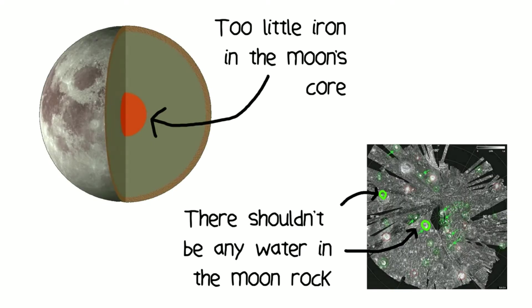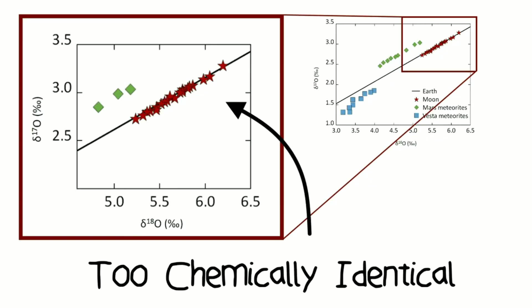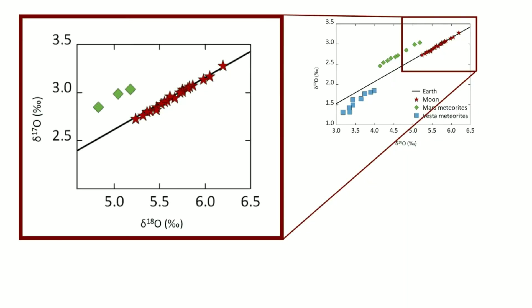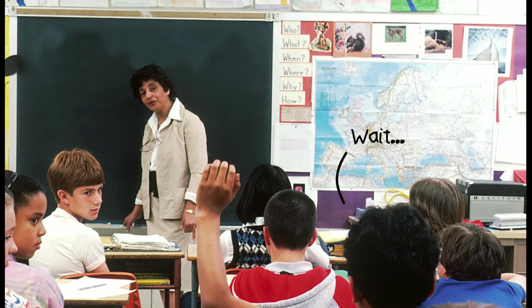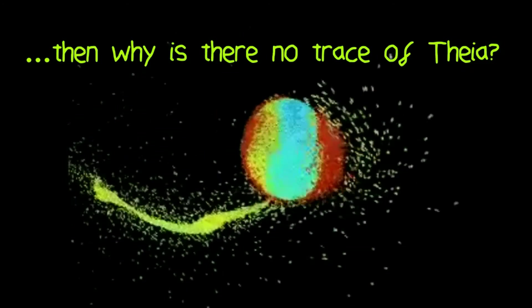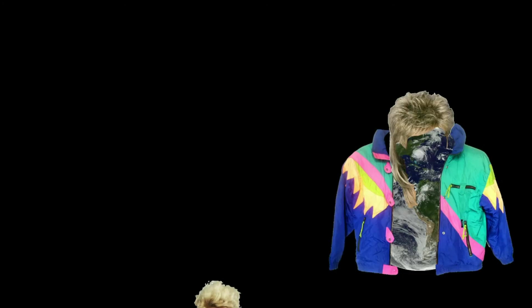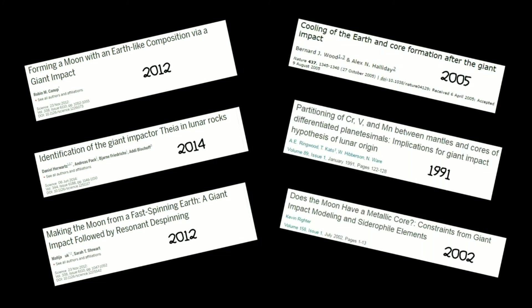This theory isn't flawless — there are issues involving the presence or lack of certain elements on the Moon, discrepancies in the angular momentum, and ironically, an issue that both the Earth and Moon are too chemically identical. The argument says: if Earth was hit by Theia, why is there no chemical trace of it? The brief explanation is that Earth ate Theia — like Pac-Man. Since this theory was proposed in the 80s, many variations have been suggested to explain these discrepancies.